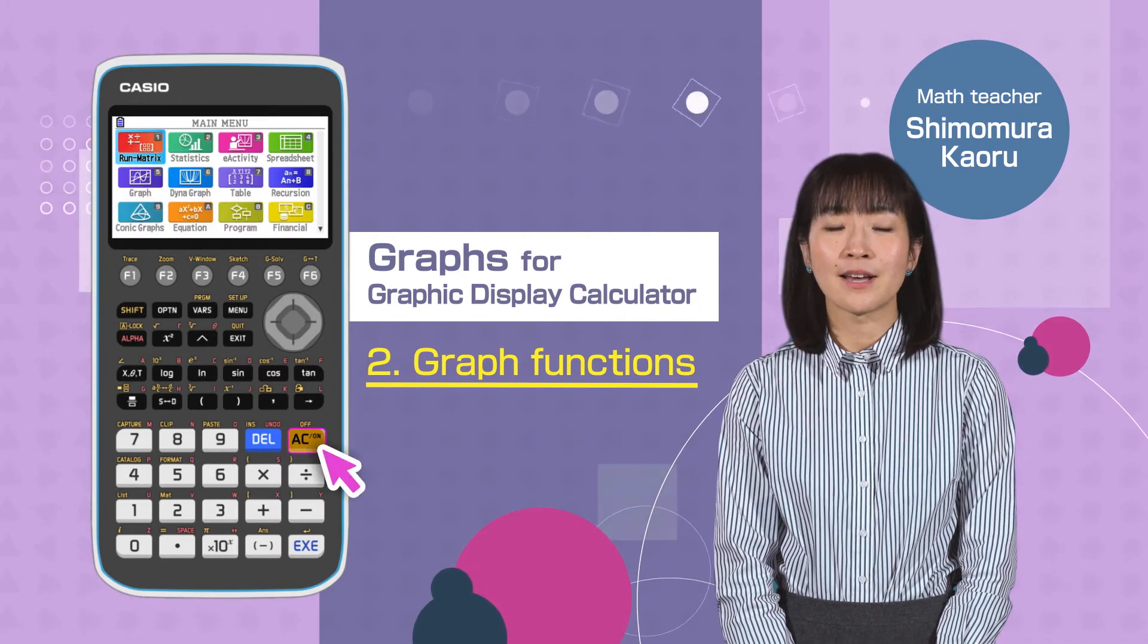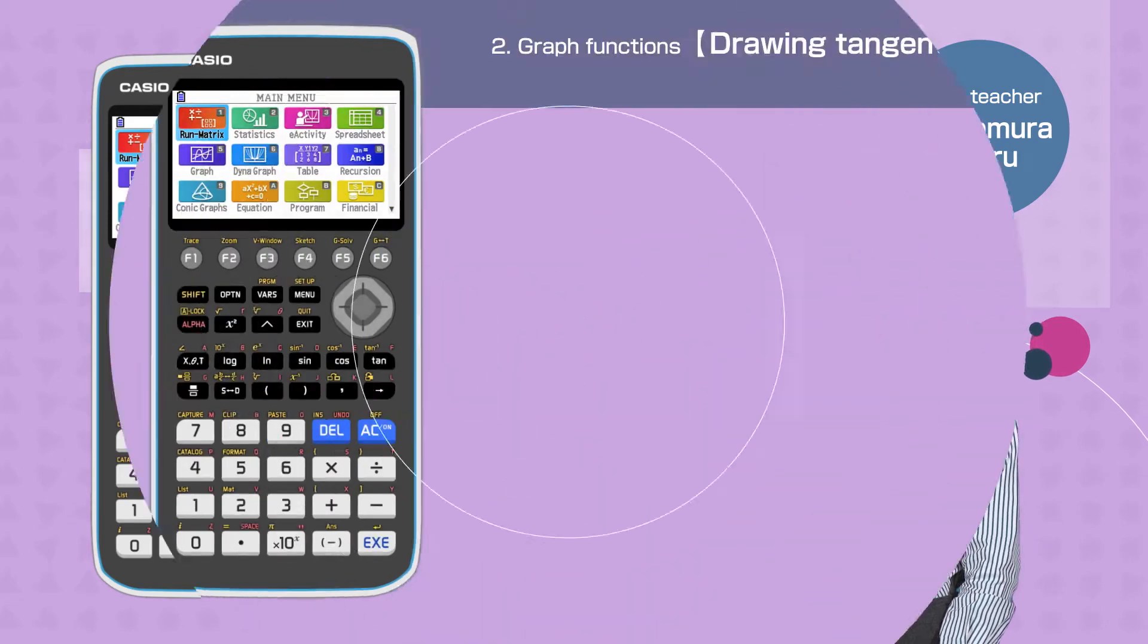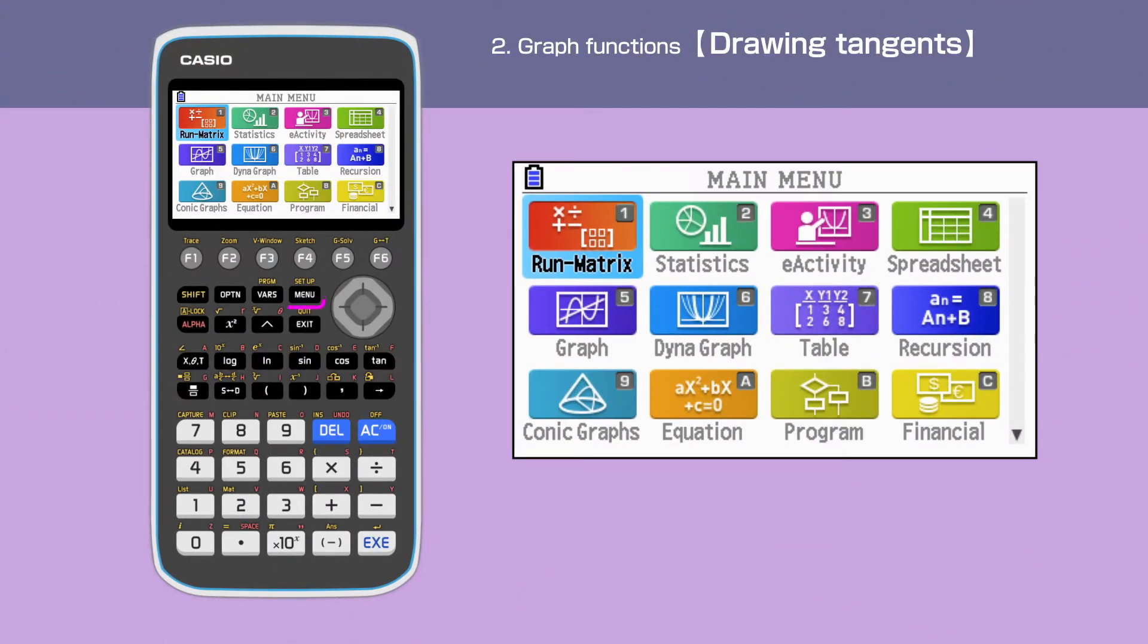Switch on your calculator by pressing the AC button. Press the menu button to open the main menu, then move the cursor or press 5 to select the graph menu.